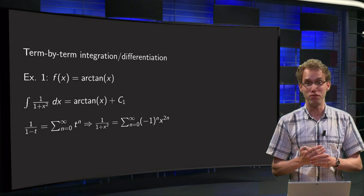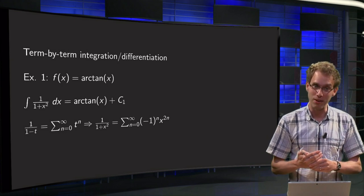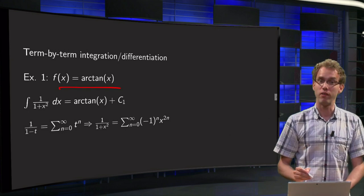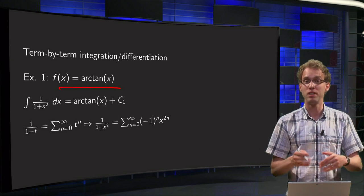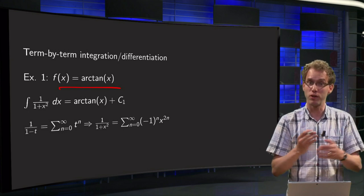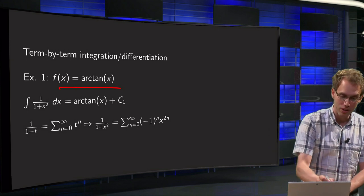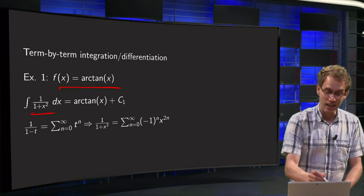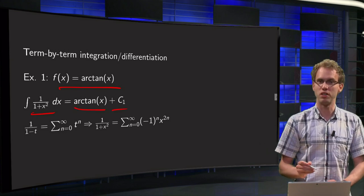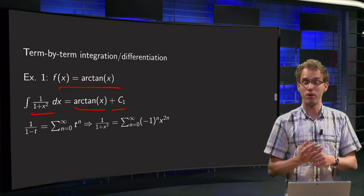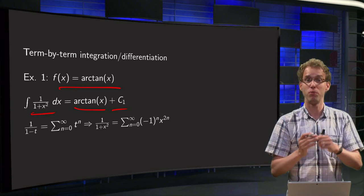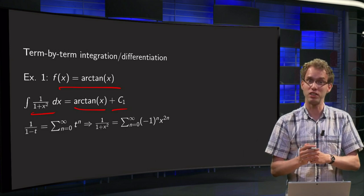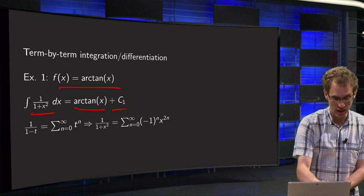How many times do I need to flip a coin in order to get tails? First, let us find the power series of arctan(x). We know that the antiderivative of 1 over 1 plus x squared is exactly arctan(x) plus the integration constant. So first we find the power series of 1 over 1 plus x squared, then we integrate, and then we can find our power series of arctan(x).